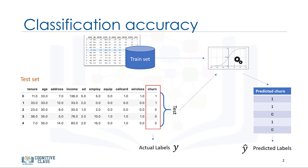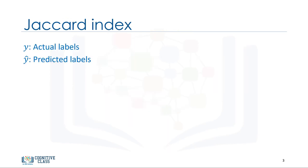Specifically, Jaccard Index, F1 Score, and Log Loss. Let's first look at one of the simplest accuracy measurements, the Jaccard Index, also known as the Jaccard similarity coefficient.